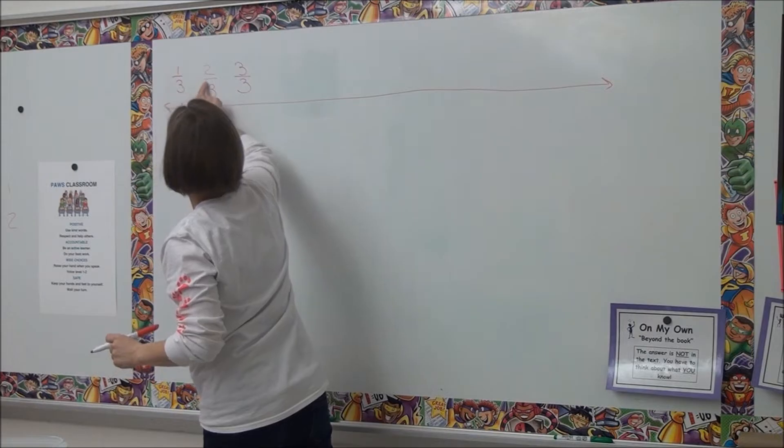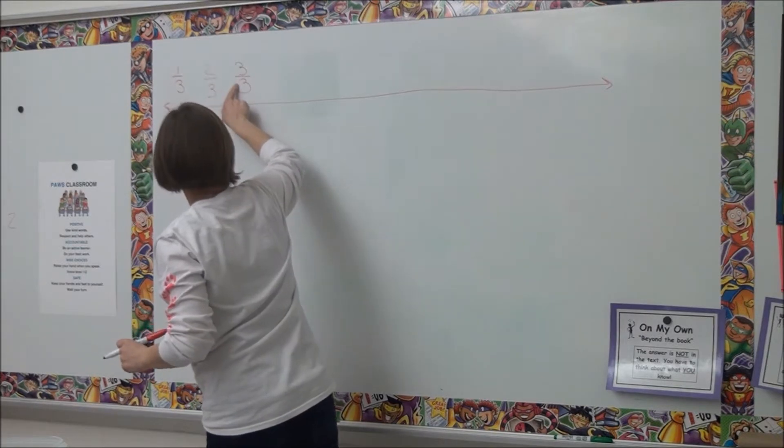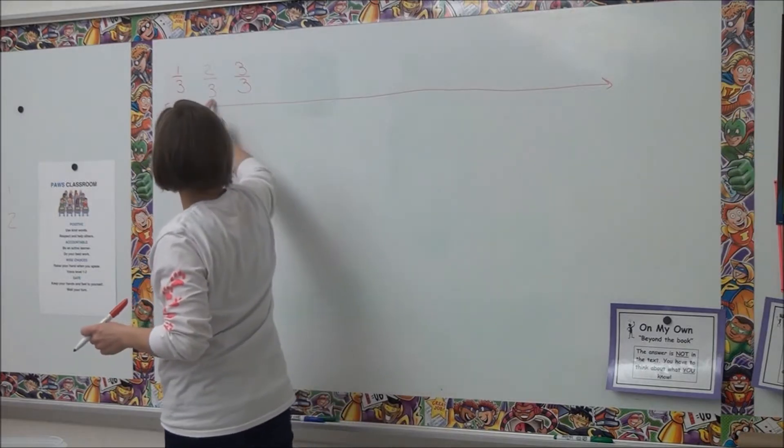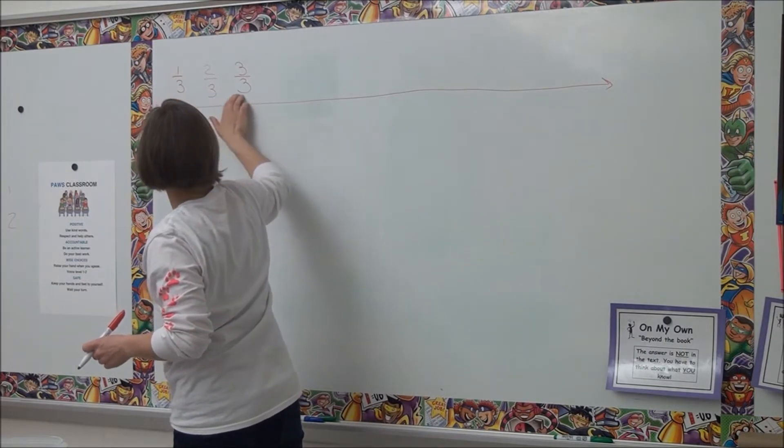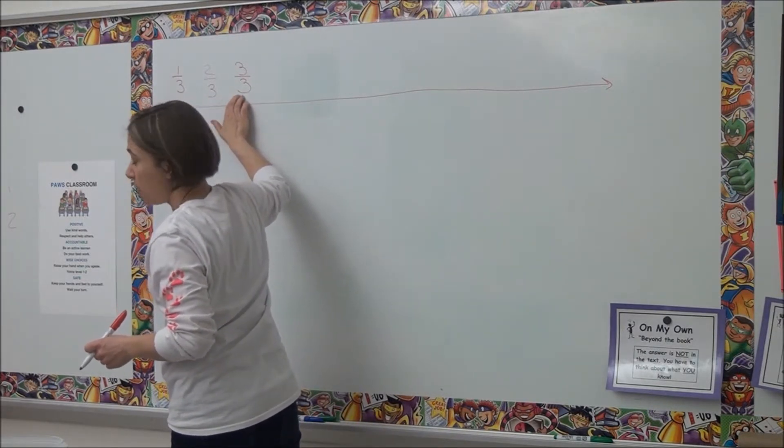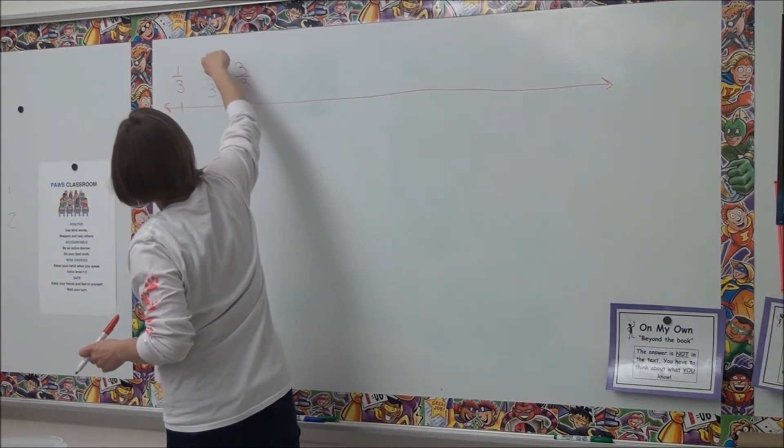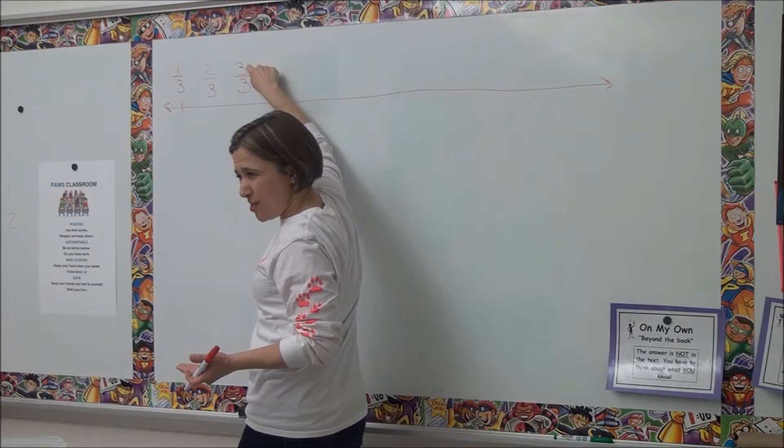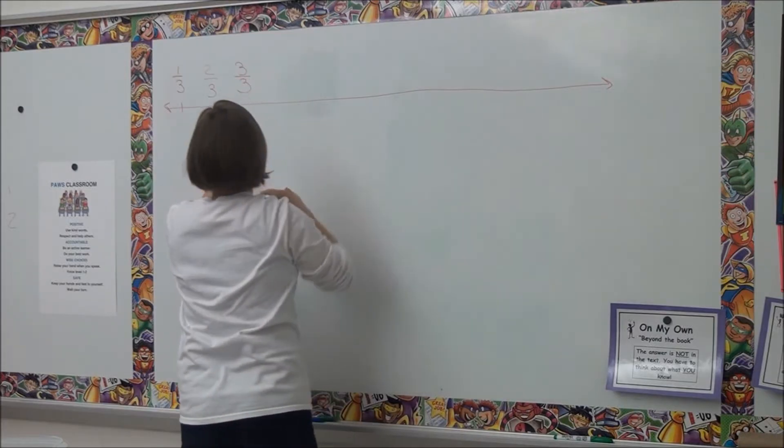One-third, two-thirds, three-thirds. Stop. That sounds great. So we are counting by thirds. This is the size of the pieces we have, right? And each time we're getting one more of those pieces. Does that make sense?